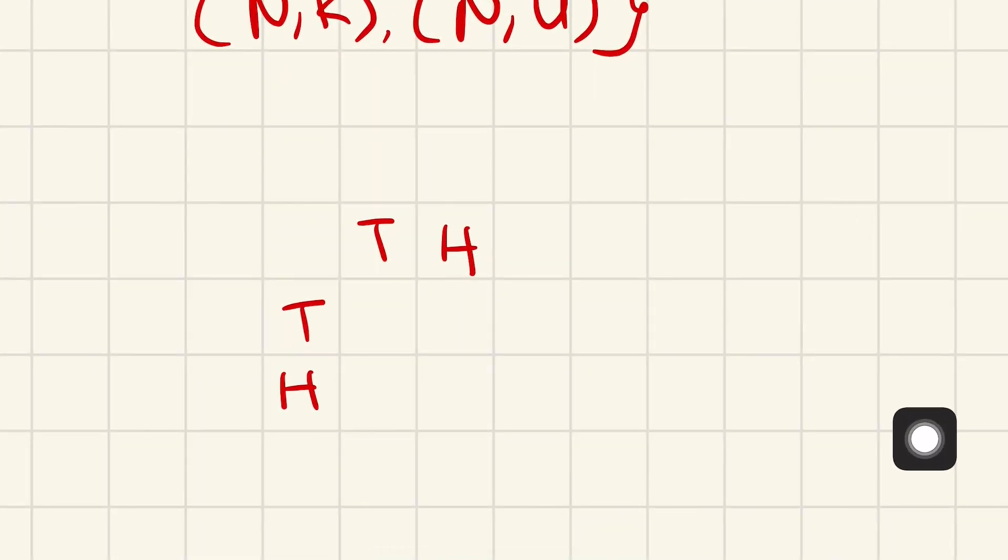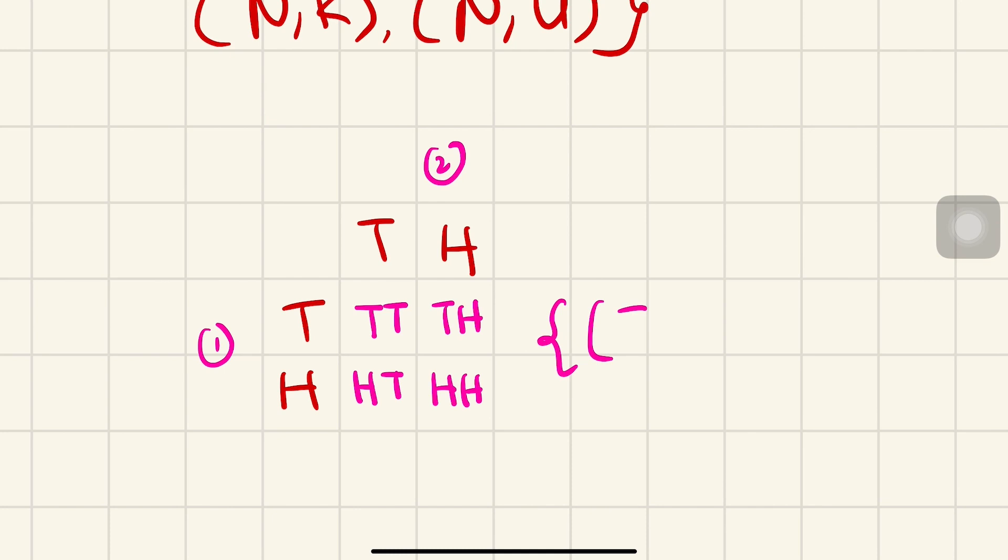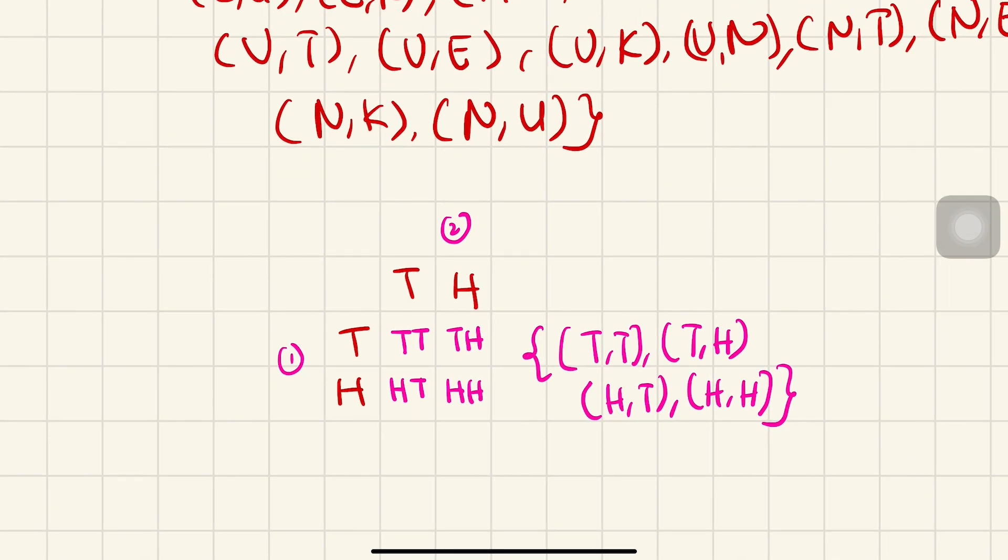This is the first coin, this is the second coin. So we might get T,T; T,H; or H,T; H,H. So our sample space must be (T,T), (T,H), (H,T), and (H,H).